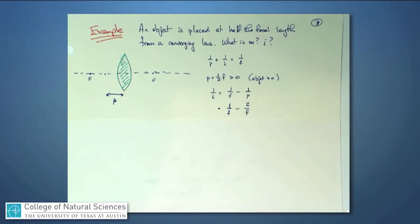If I solve, that becomes minus 1 over f. And in other words, the image distance is minus f. That's interesting.